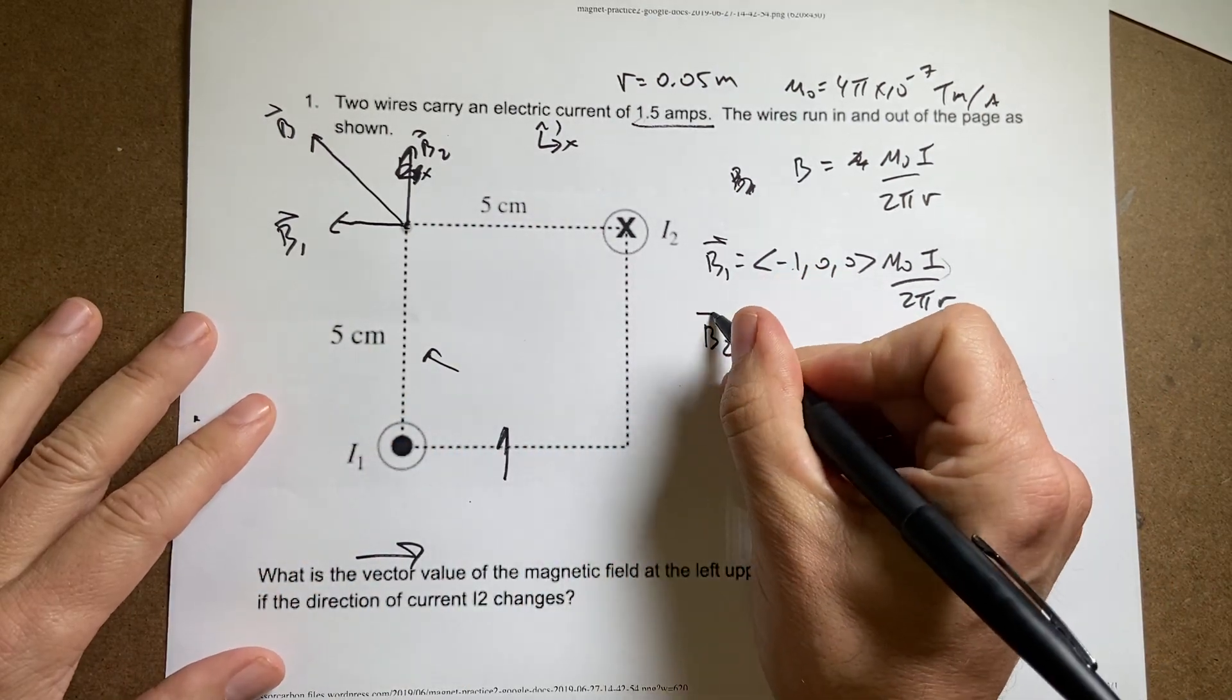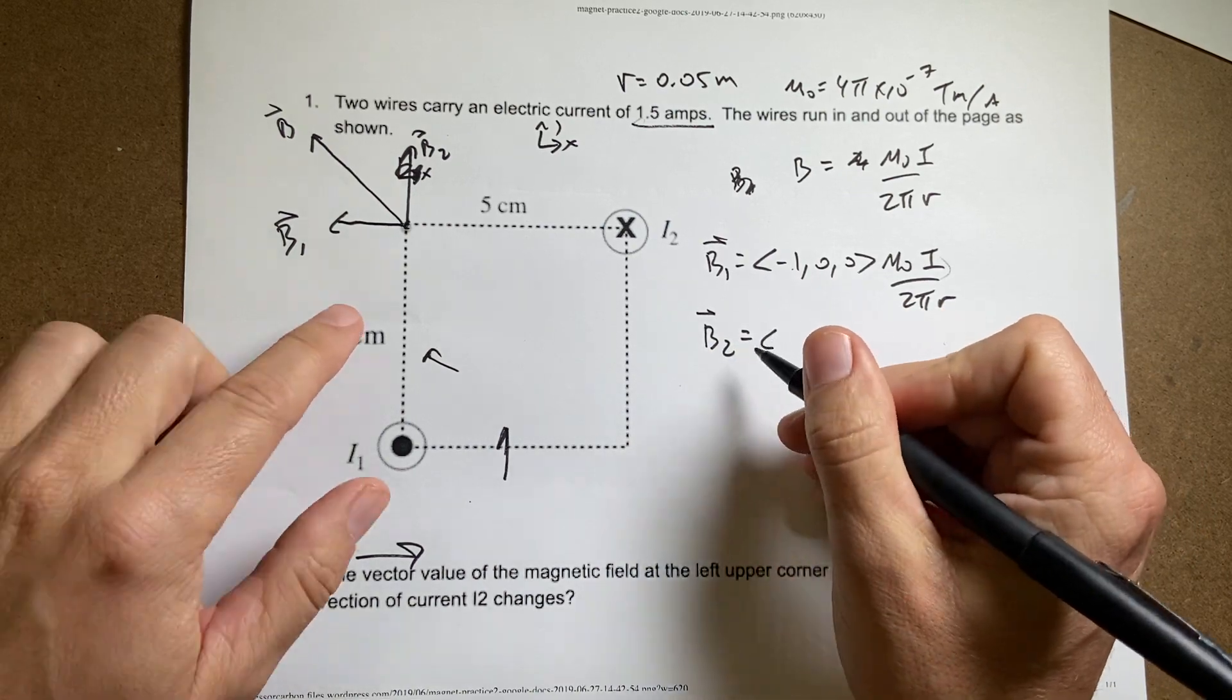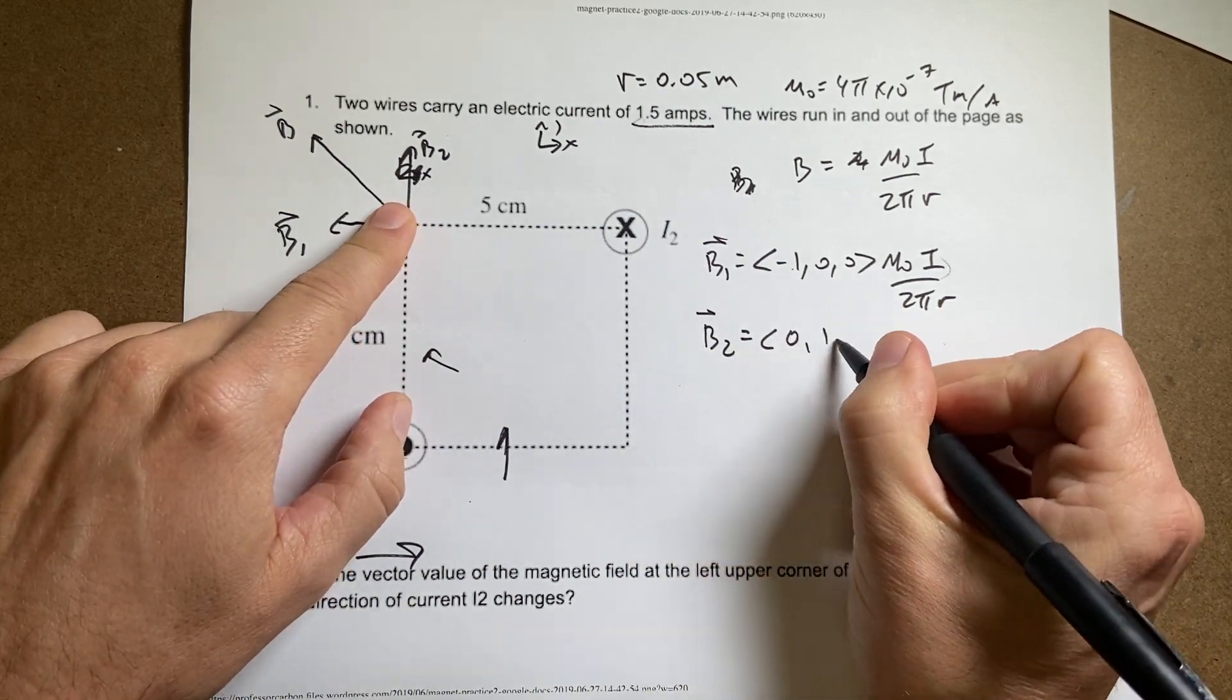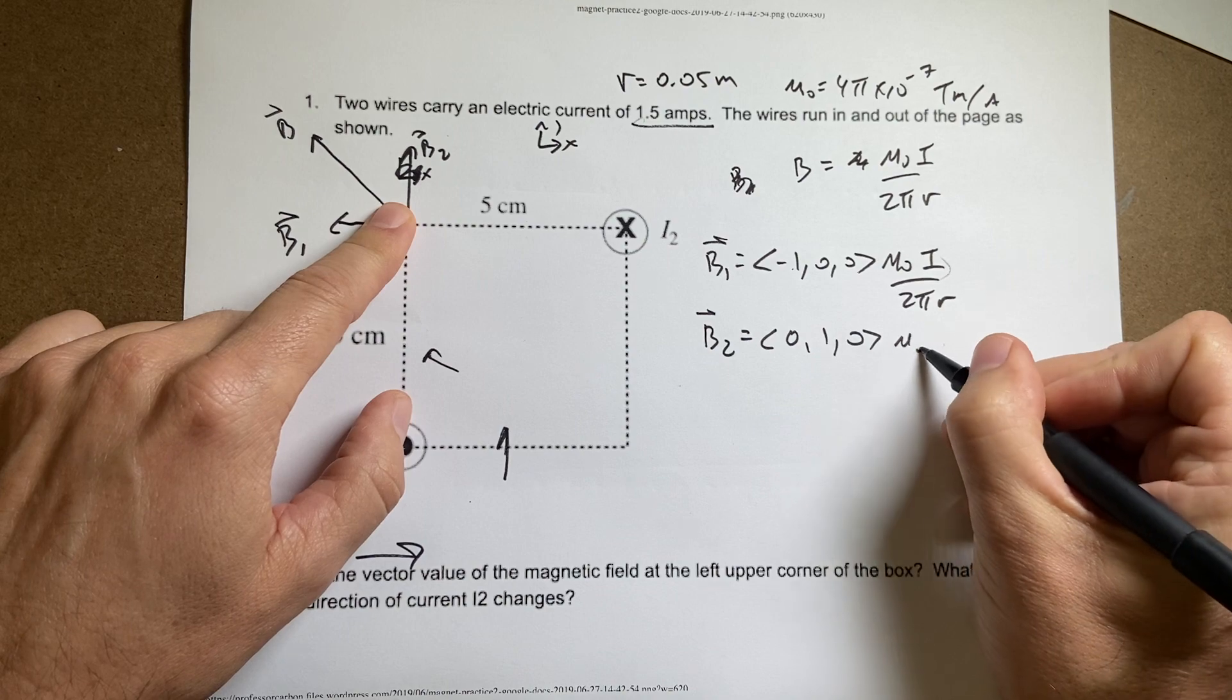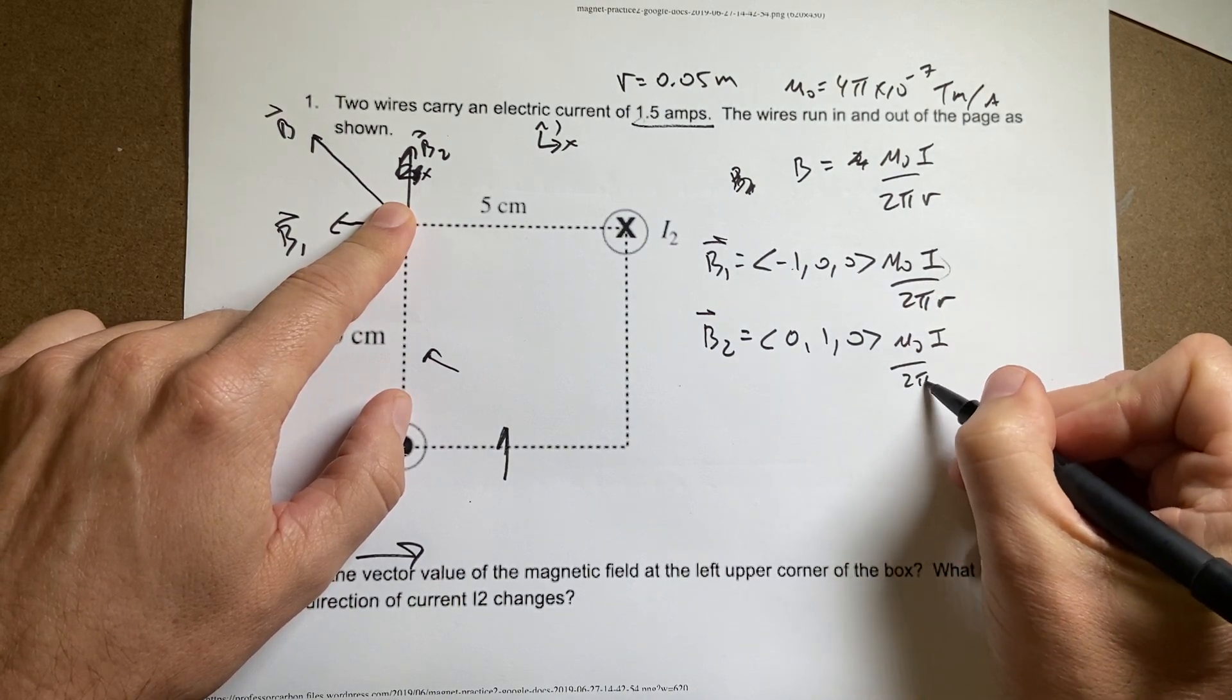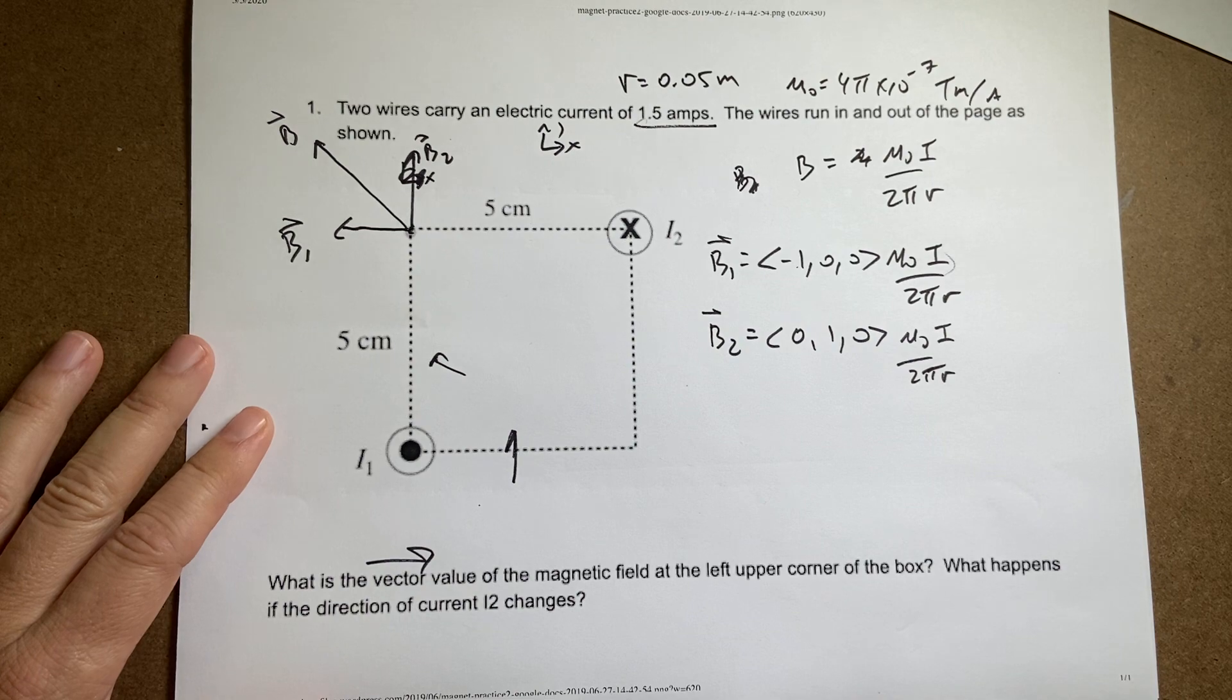Now I can do the same thing for the B2. It's going to be equal to 0, 1, 0. But the components are the, I mean, the magnitude is the same. So now I have two vectors.